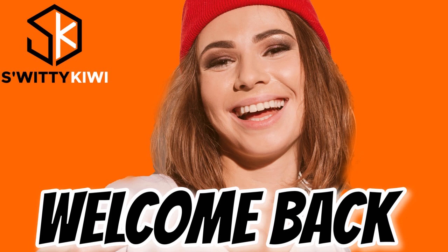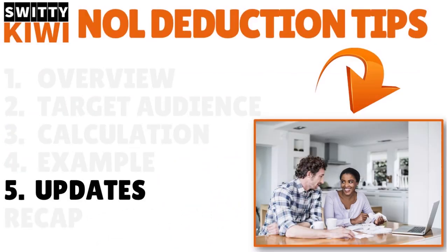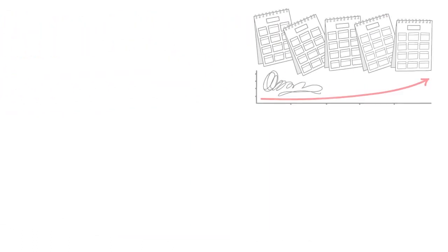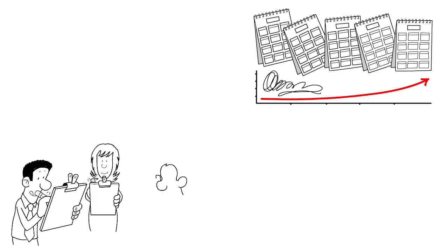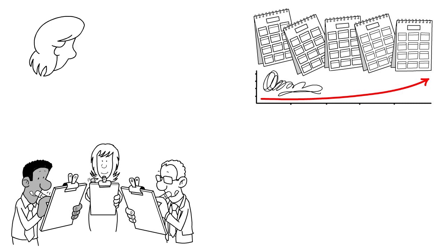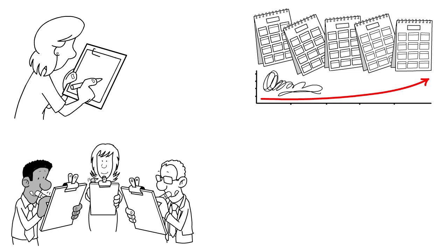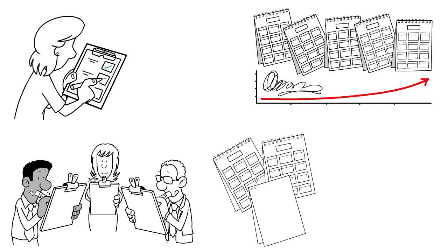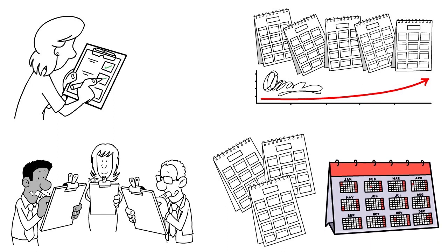Welcome back. Let me give you a few updates. It's important to note that there have been changes to NOL rules. In 2017, the Tax Cuts and Jobs Act — the TCJA — made significant changes to the laws regarding net operating losses. The TCJA removed the two-year carryback provision for tax years beginning January 1st, 2018 or later, except for certain farming losses. However, the law now allows for an indefinite carry forward period.